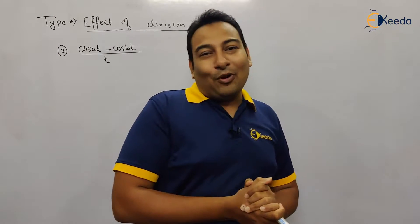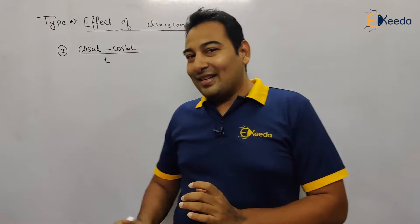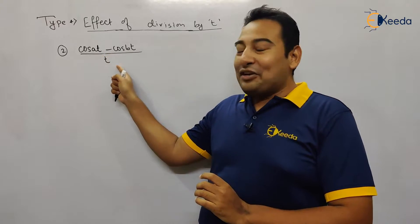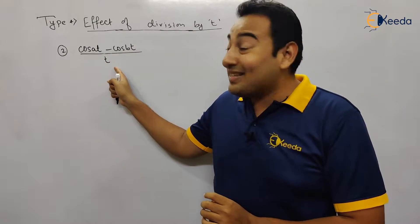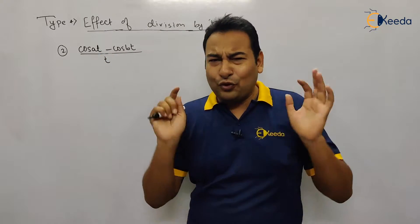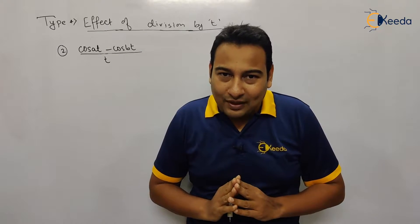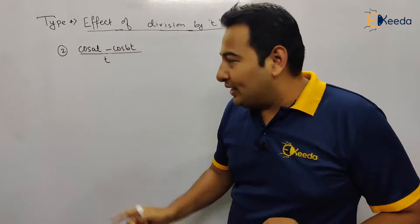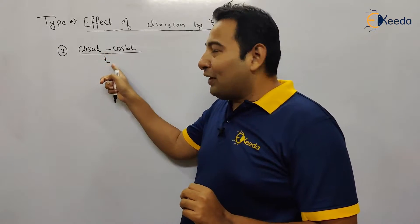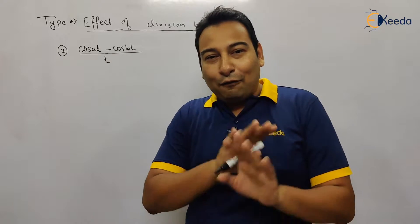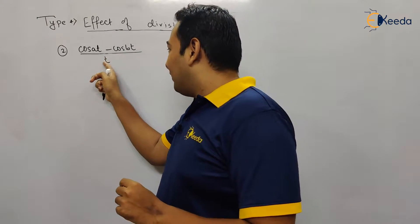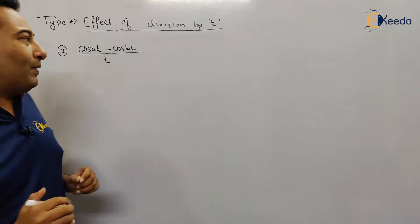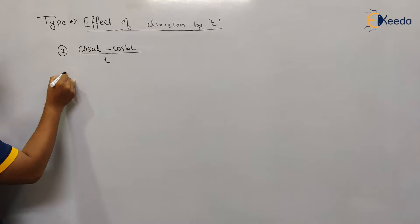First of all, try to identify the property given in the problem. What you can identify from this is the effect of division by t — that is for sure. What is the technique? Forget about the property for now. This is your effect of division by t — let's leave it and move forward.